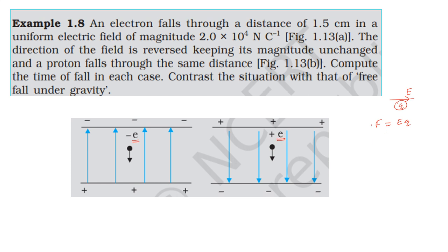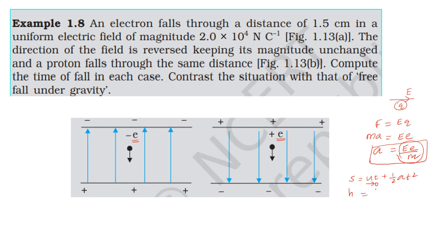Applying Newton's second law: force equals mass times acceleration, so qE = ma, giving acceleration a = qE/m. For a particle moving with constant acceleration, the kinematic equation is s = ut + ½at². Since the initial velocity u is zero, this simplifies to s = ½at². Rearranging gives t² = 2s/a, so the time t = √(2h/a).